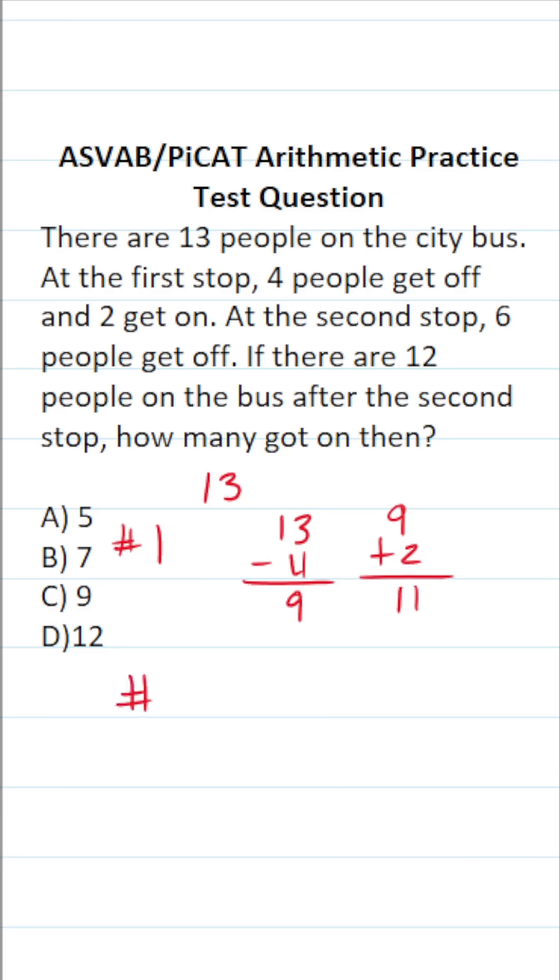So as we go to the second stop, we know that there are 11 people currently on the bus. All right, at the second stop, six people get off the bus, so this is going to be 11 minus six, which is five. And we know that after the second stop, there are 12 people on the bus.